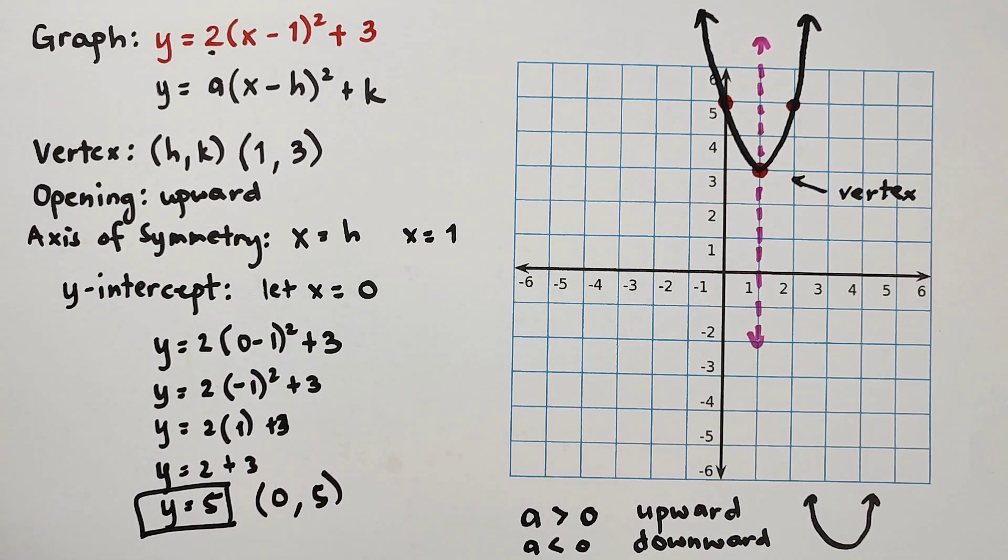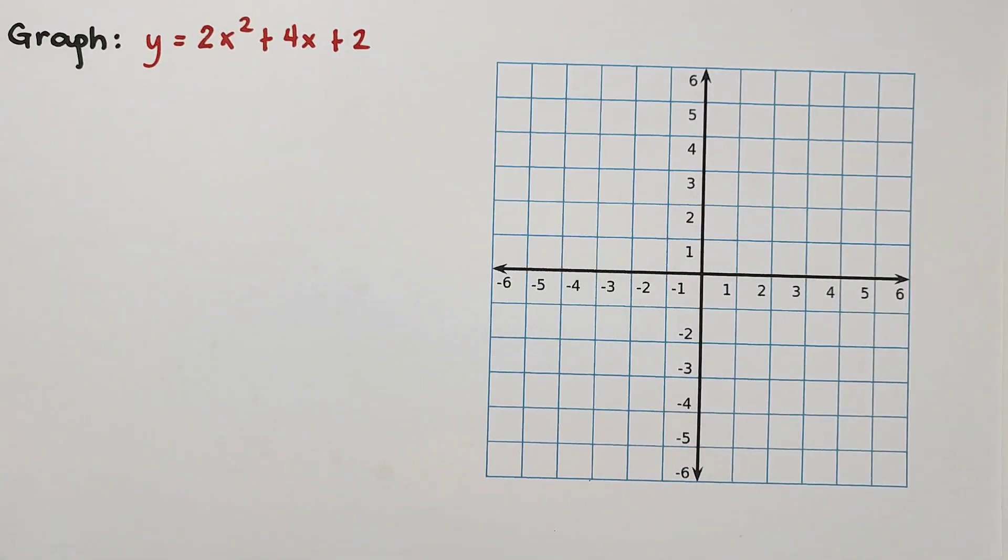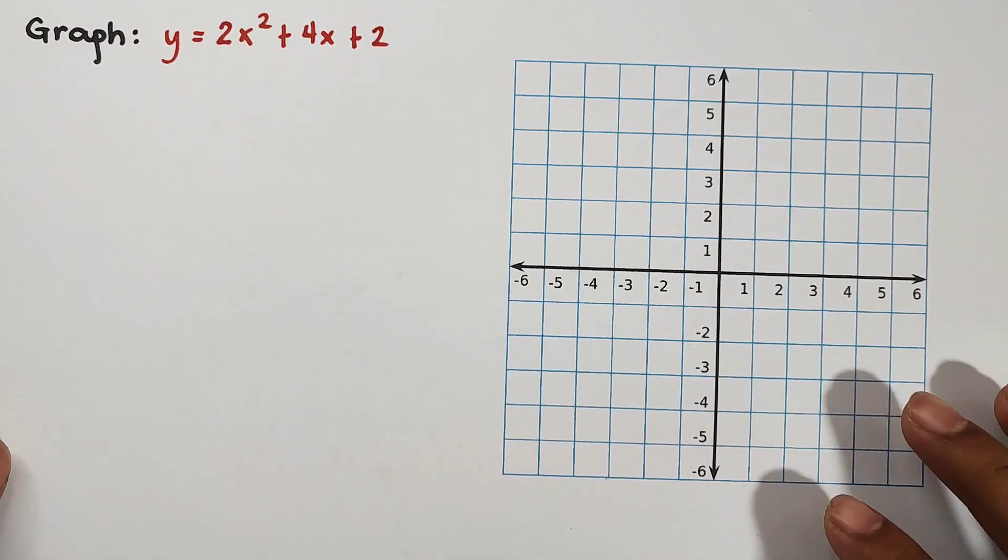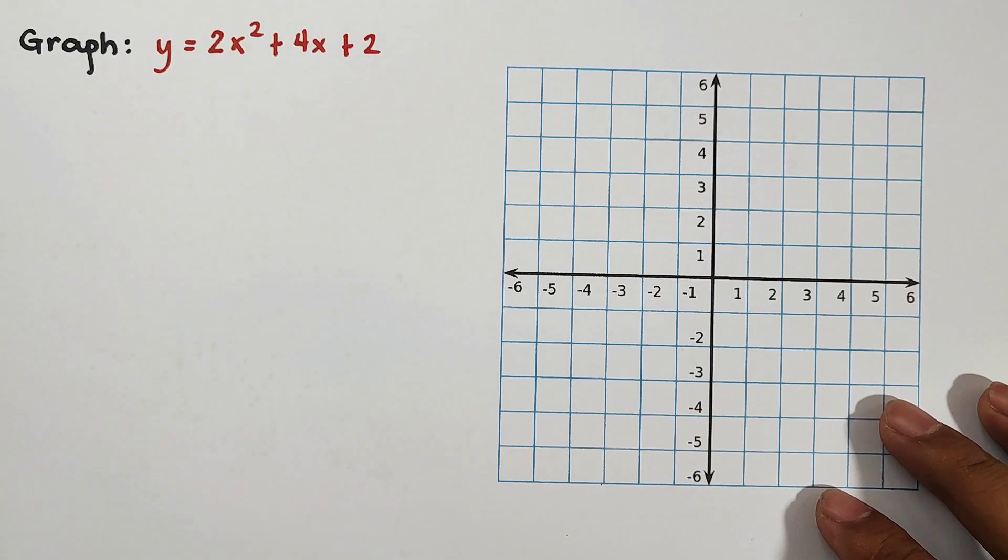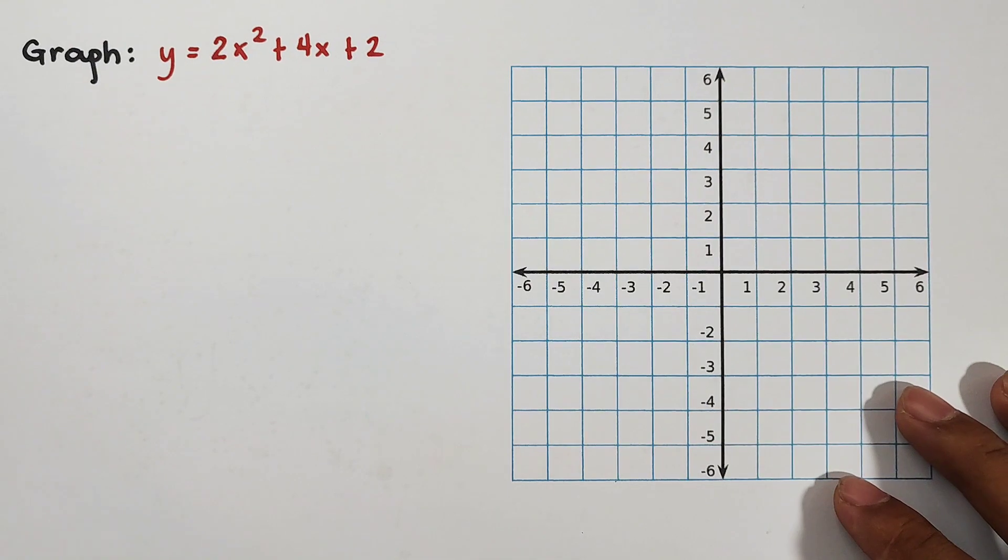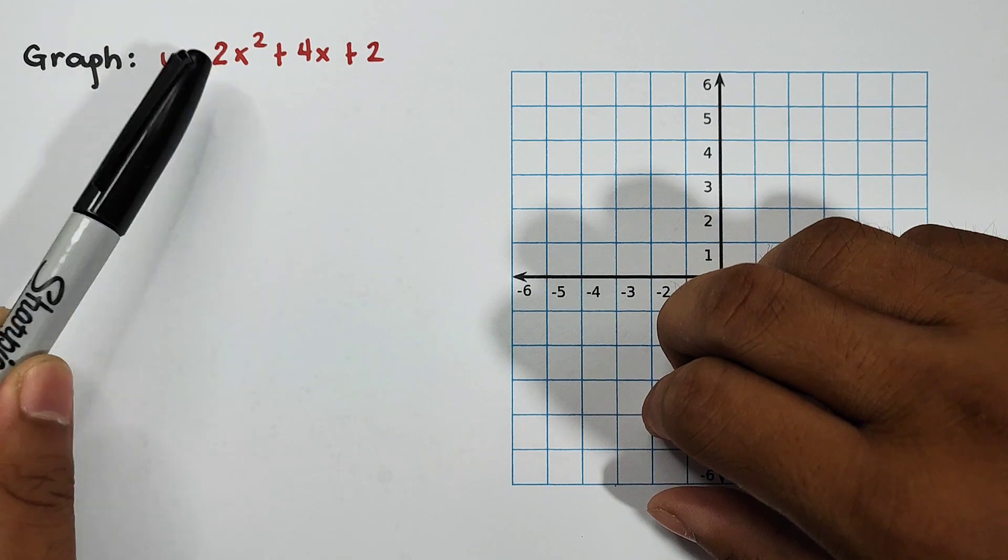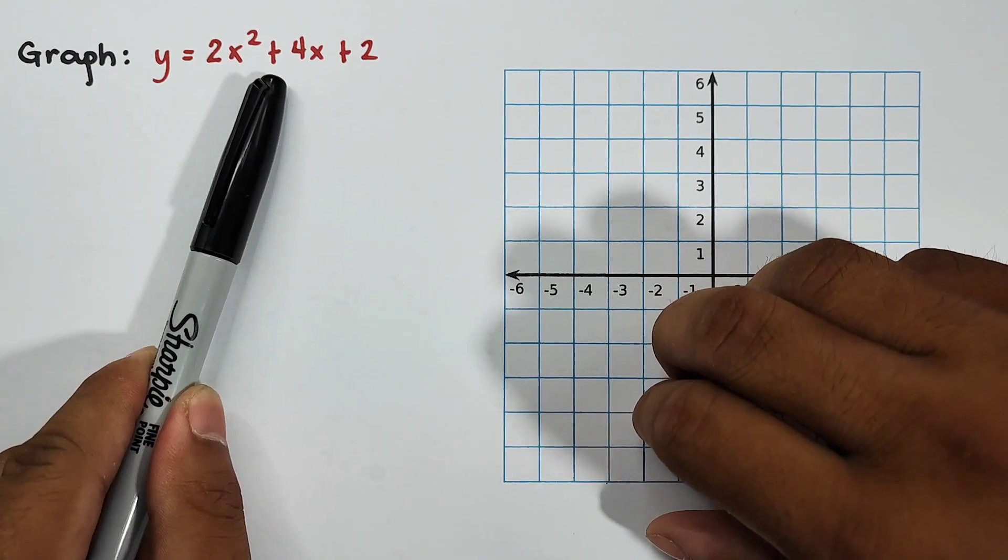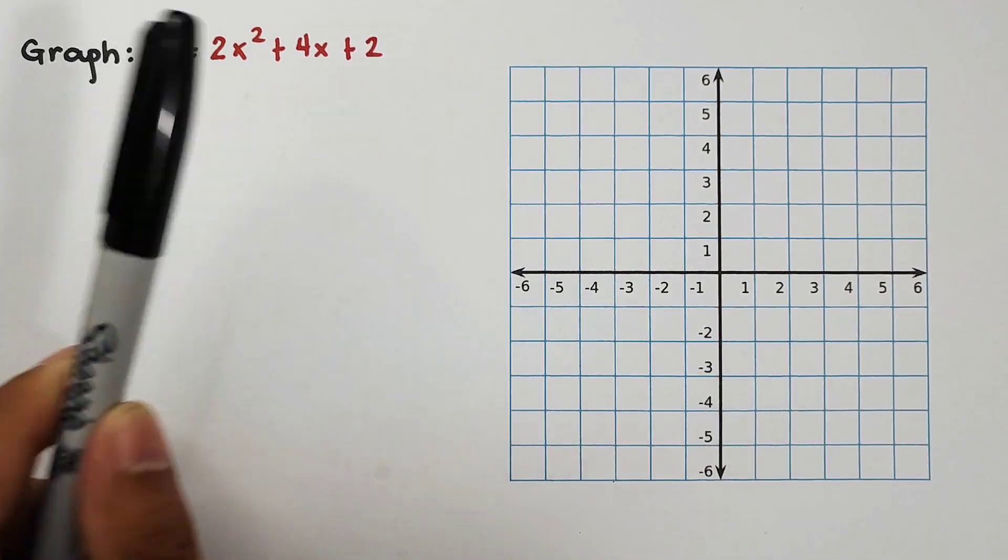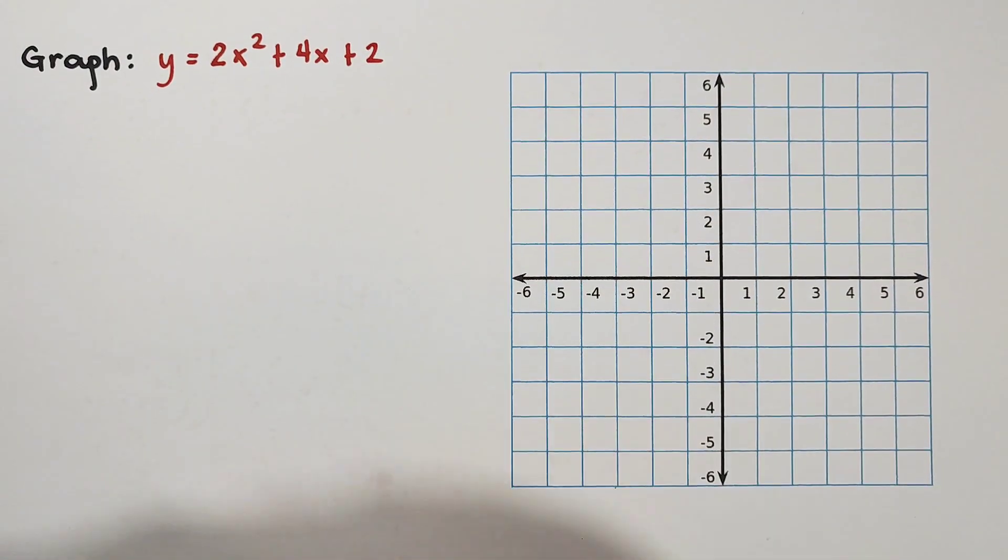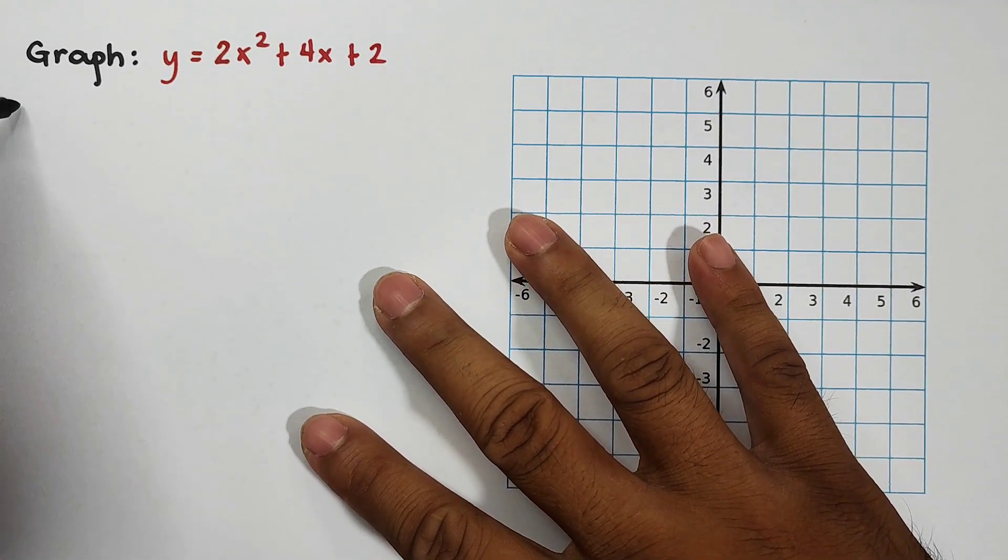For item number 2, let's continue. Now, for item number 2, look at the equation. We have y = 2x² + 4x + 2. So, similar to what we did earlier, we will identify the vertex. But the question here is, sir, how can we identify the vertex because it's not in vertex form?